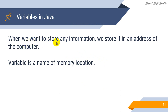When we want to store any information, we store it as an address of the computer. The data and information can be stored as an address. If we have the data, we can store it as an address, and we can store it in binary format.